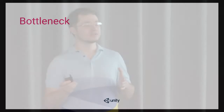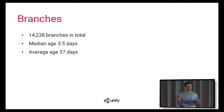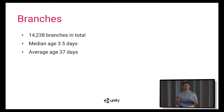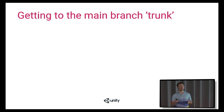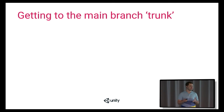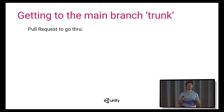What's led us to become successful with all those numbers has become a bottleneck. In order to understand that, we need to dig a bit into how development is done in Unity. It's done in branches: when a team needs to develop some functionality, they branch out the main branch called trunk and develop their stuff there. Then when they have their changes — called a pull request — they need to get into the mainline, which is called trunk.